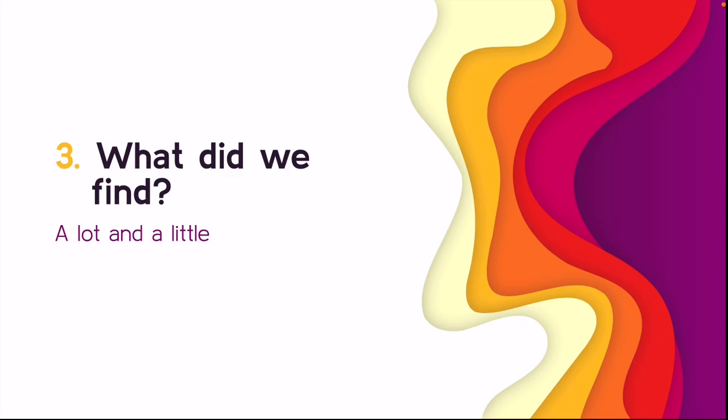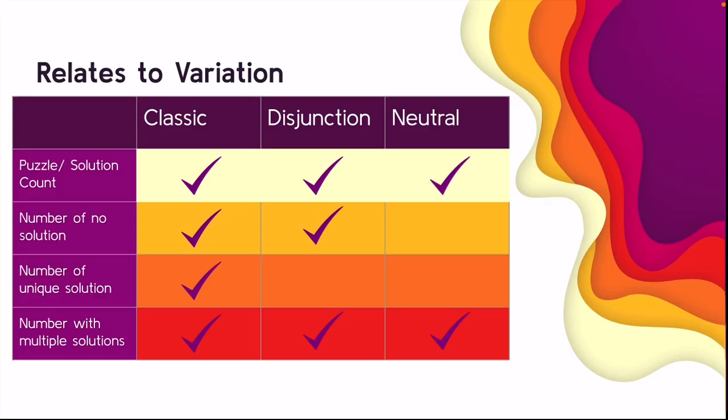So what did we find? I like to describe it as a lot and a little. We were able to find answers to many of the questions Levens and Roberts posed. I have a table showing what we found depending on the version of the puzzle. For the classic variation it was easier, but for the disjunction and neutral versions, the expressions became very long and much more complicated.